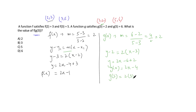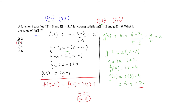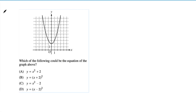Now find f(g(3)). First, g(3) = 2(3) − 4 = 6 − 4 = 2. Then f(g(3)) = f(2) = 2(2) − 1 = 4 − 1 = 3. Our final answer is 3.